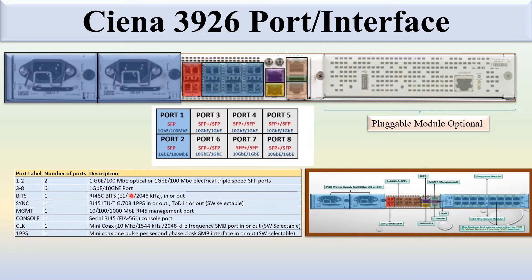There are 6 ports which are 1GB or 10GB ports. You can see the BITS port — there is 1 port. Then 1 SYNC port, 1 management port, 1 console port, 1 clock port, and 1 PPS. The BITS interface is RJ48C, supporting E1, T1, or 2048 kHz in and out. SYNC is RJ45, IT2, G.703, 1 PPS in or out, TOD in or out, software selectable. Management port is 100/1000MB RJ45. Console is a serial RJ45 EIA-561 console port. Clock is mini-coax supporting 10 MHz, 1544 kHz, or 2048 kHz — any of these frequencies, SMB port in and out, software selectable. 1 PPS is also mini-coax, 1 pulse per second phase clock, SMB interface in or out, also software selectable.